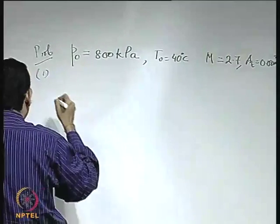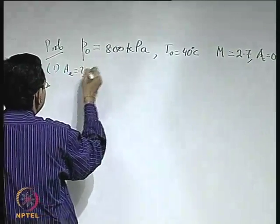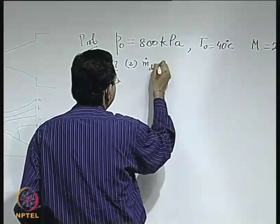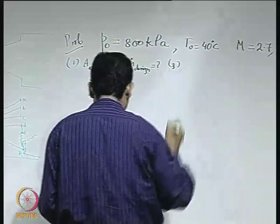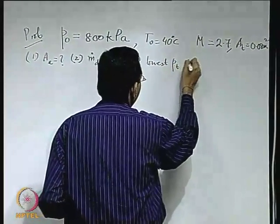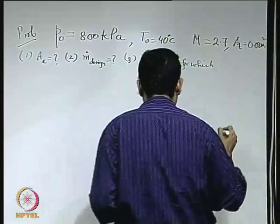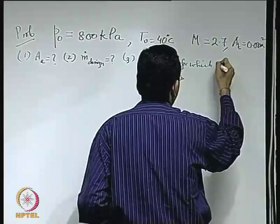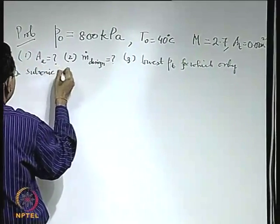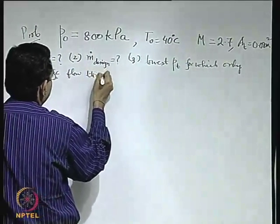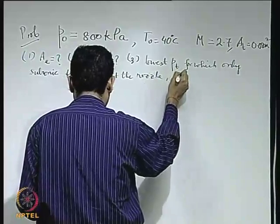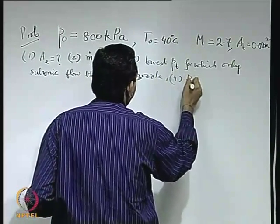The following questions are to be answered. Number 1: what is the area of the exit? Number 2: what is the designed mass flow rate? Number 3: what is the lowest back pressure for which there is only subsonic flow throughout the nozzle? Number 4: what is the design back pressure?